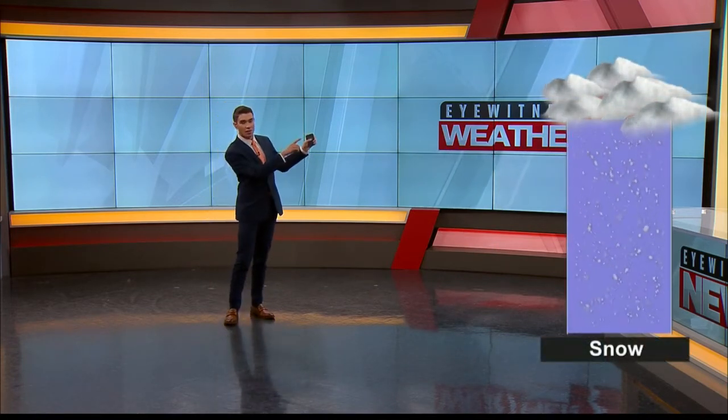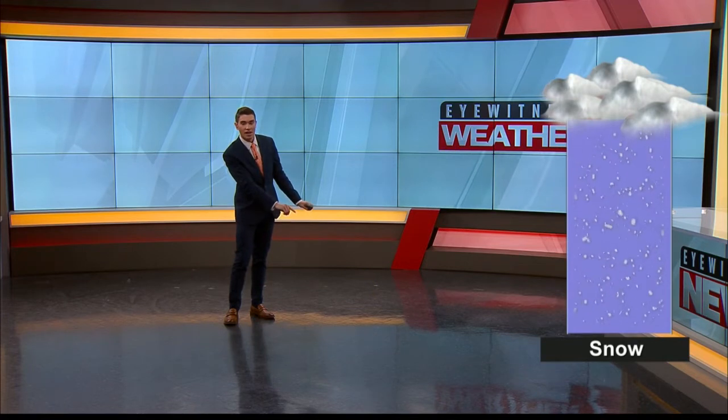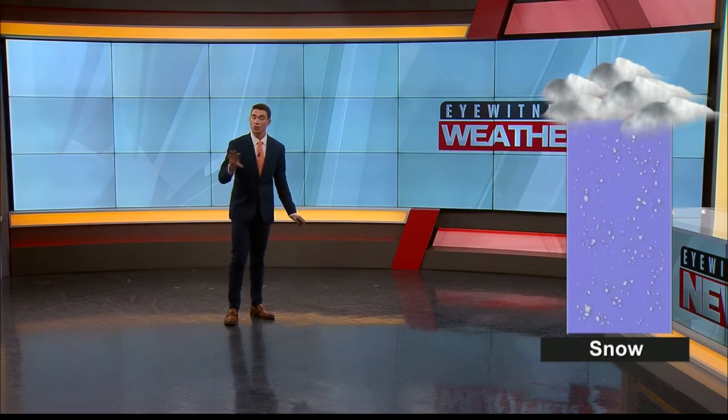And then obviously we have to talk about snow. Those snowflakes continue to fall from the cloud all the way from the top of the cloud right to the bottom. That's what gives us snow — the temperatures in the whole entire layer of the atmosphere are at or below freezing.